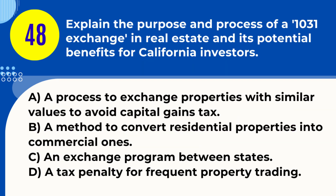Question 48. Explain the purpose and process of a 1031 exchange in real estate and its potential benefits for California investors. A. A process to exchange properties with similar values to avoid capital gains tax. B. A method to convert residential properties into commercial ones. C. An exchange program between states. D. A tax penalty for frequent property trading. Answer: A. A process to exchange properties with similar values to avoid capital gains tax. Explanation: A 1031 exchange in real estate allows investors to defer capital gains tax by exchanging one investment property for another of similar value.